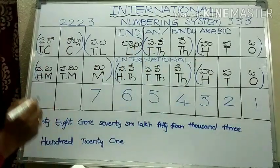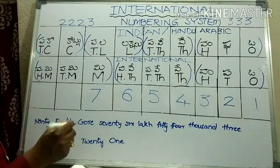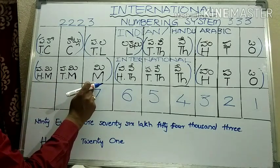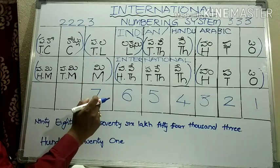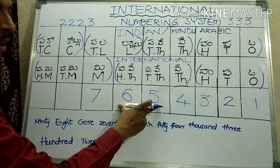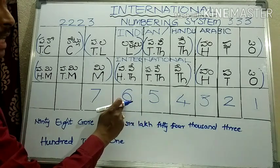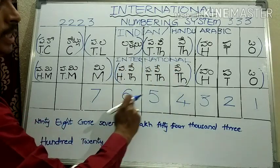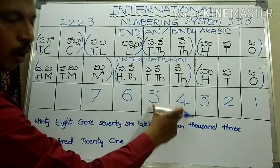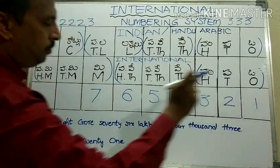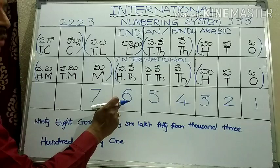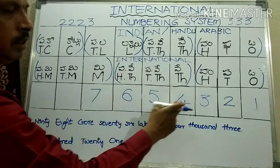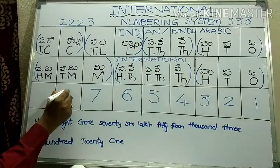Now in the international system for this same number, 7 is in the millions place — 7 millions. The next three digits 654 are in one group: hundreds, tens, and ones of thousands. So we read it as 7 millions, 654,321.